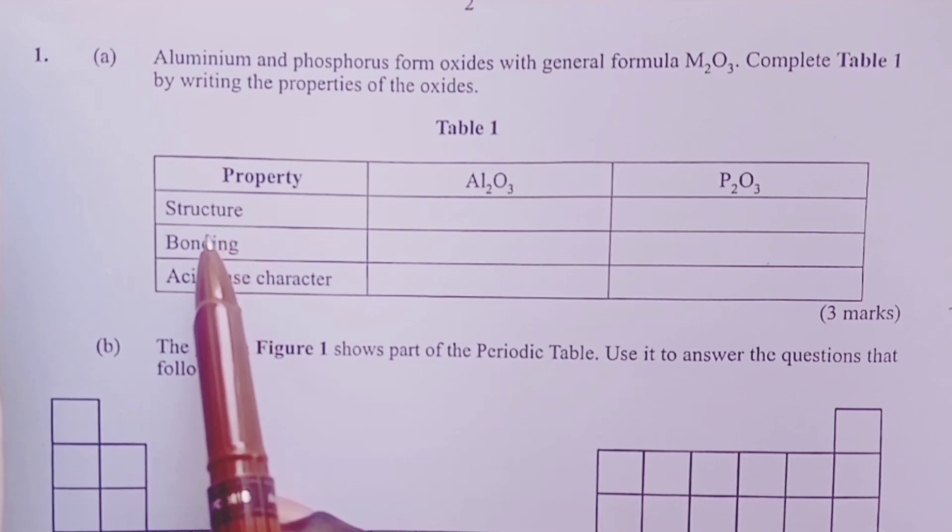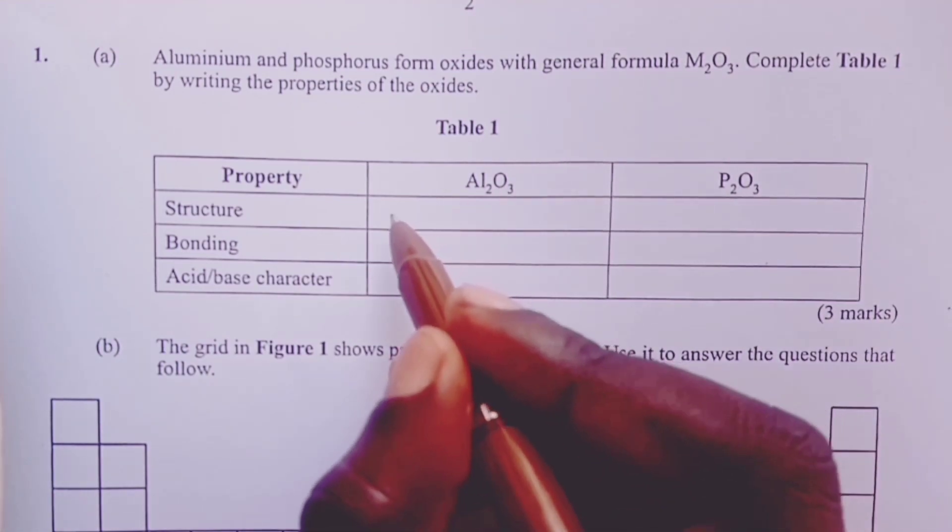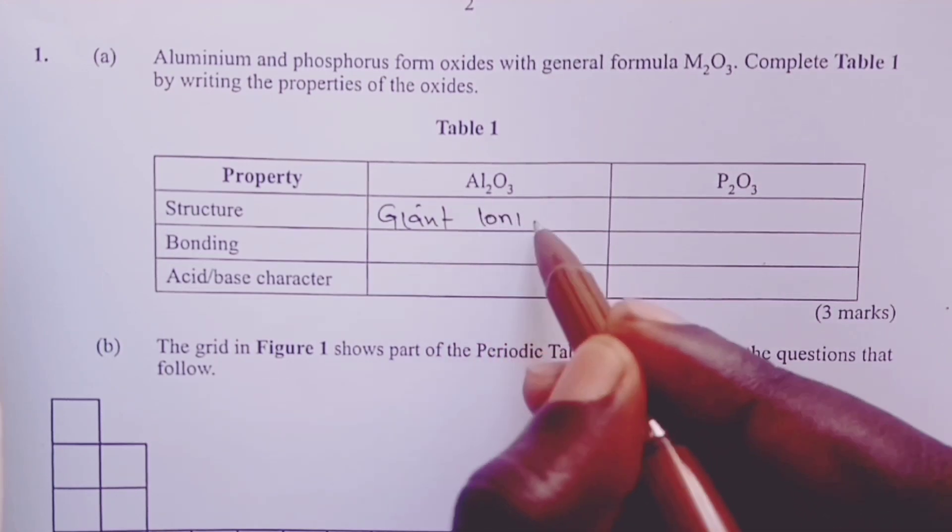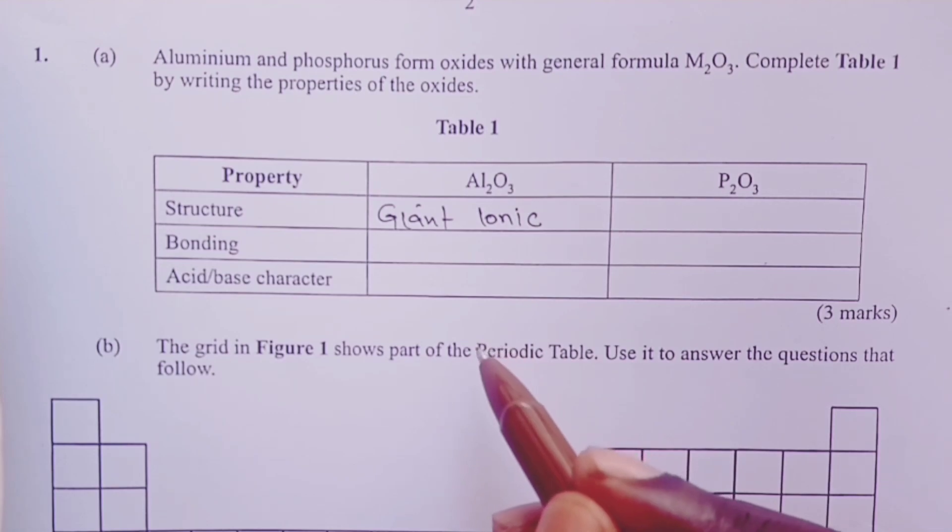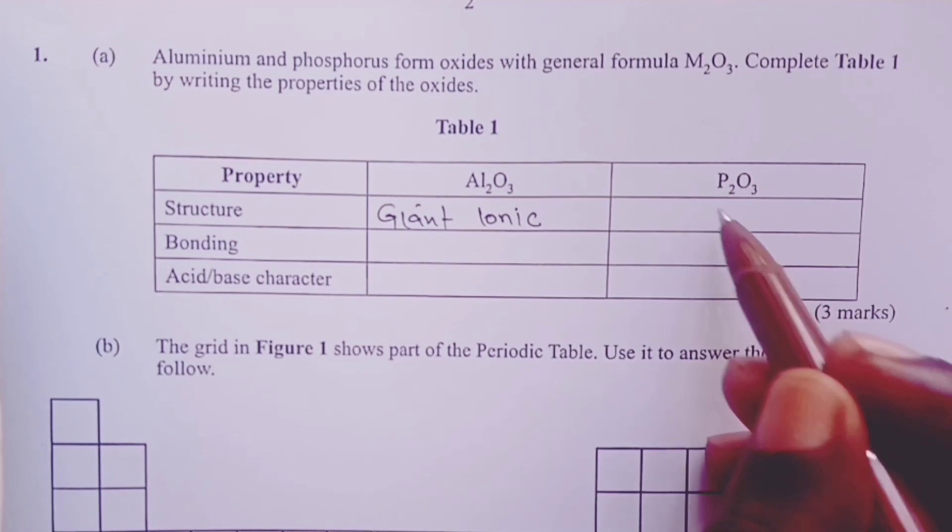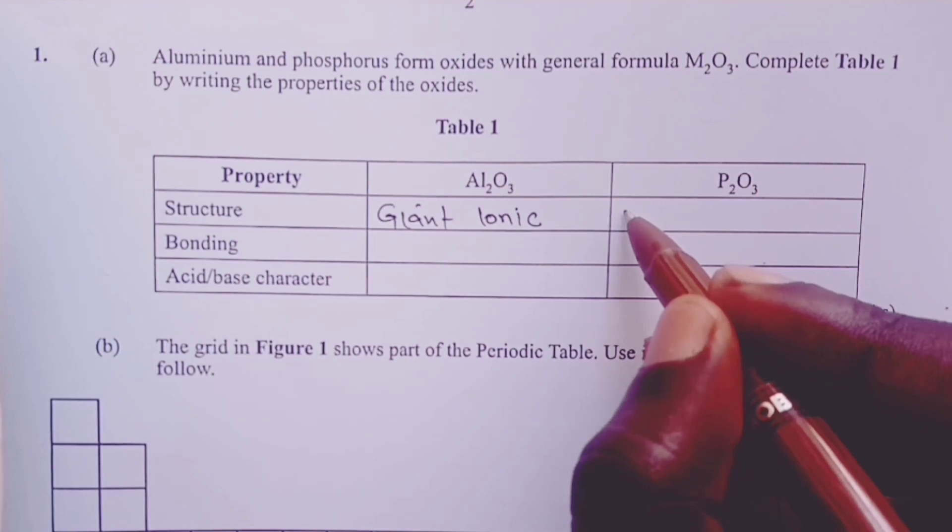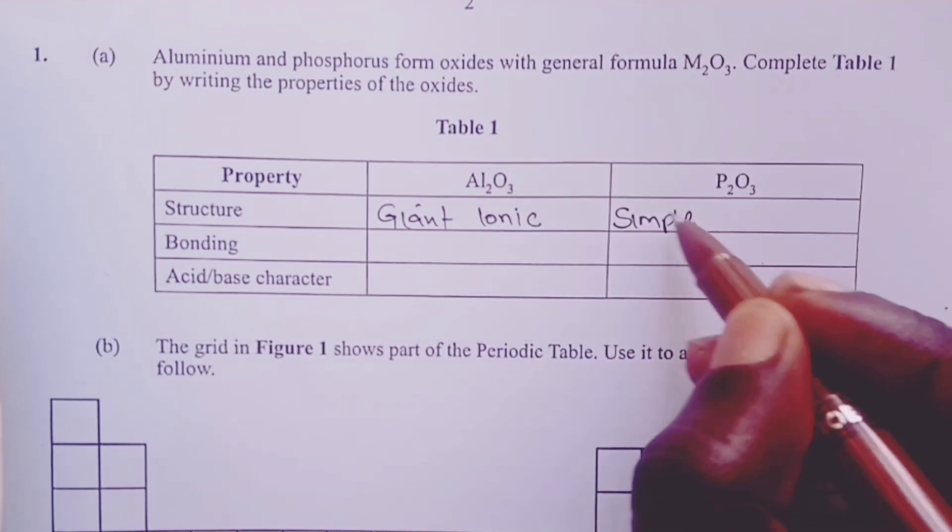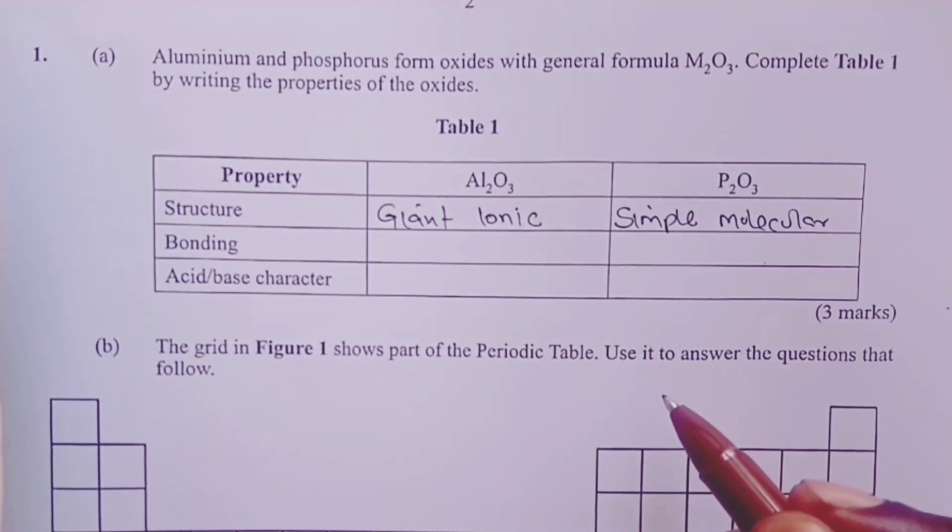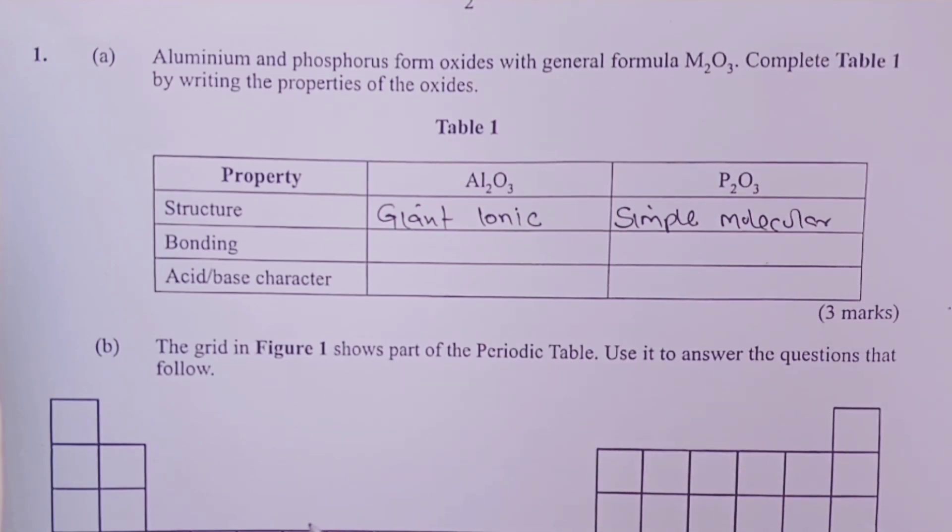We start with the first property, which is the structure. Aluminum oxide has a giant ionic structure. Remember, it is made of an atom of a metal and a non-metal, so the structure expected here is giant ionic. For the phosphorus oxide, these are two non-metals, so we expect simple molecular structure. Or if a candidate just wrote molecular structure, we would still give the half mark.